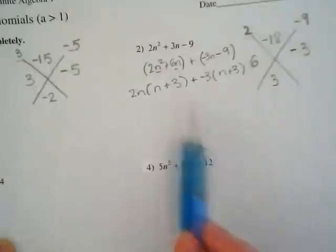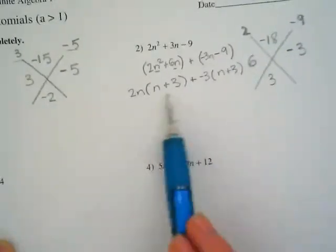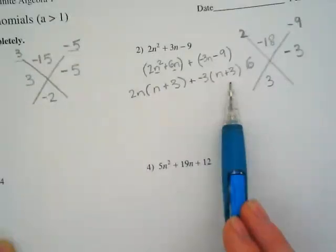So notice, what's left in the parentheses, n plus 3, it's the same for both of them.